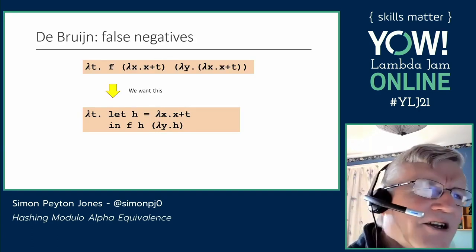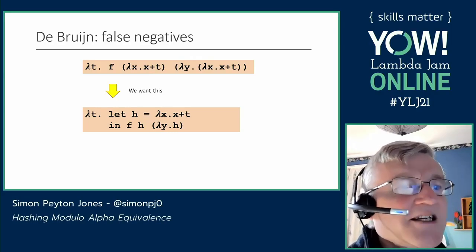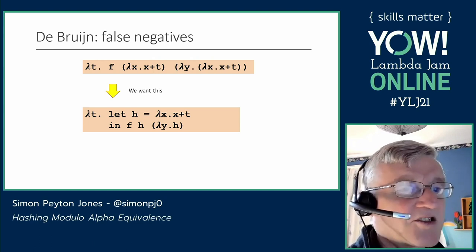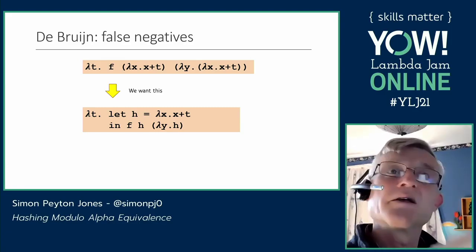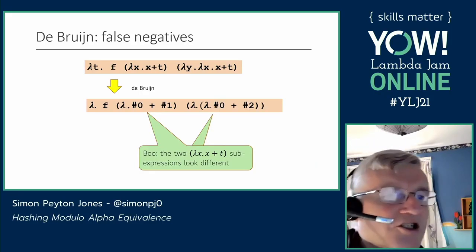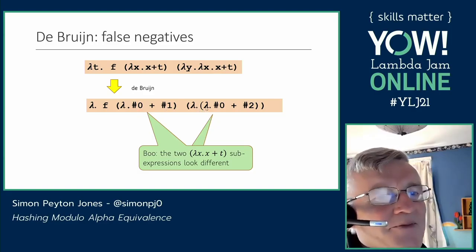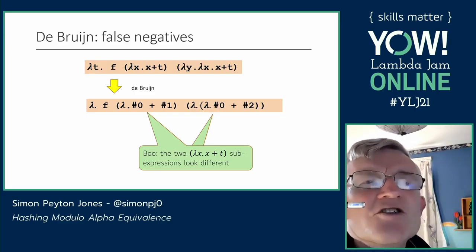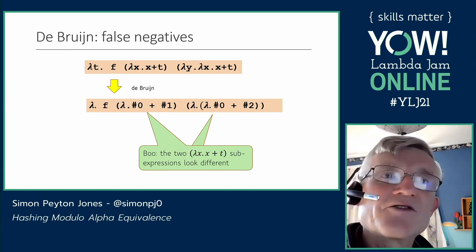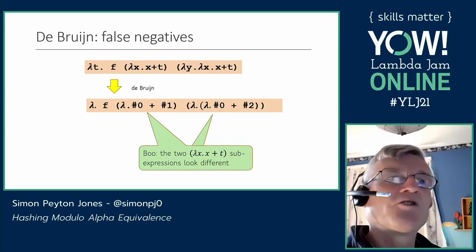Here's a false negative. I have an expression with lambda t on the outside and f applied to two lambdas. Inside the right-hand lambda is lambda x, x plus t, and the first argument is also lambda x, x plus t — we'd like to share those. But when we convert to De Bruijn notation, the first occurrence gives hash 0 for x and hash 1 for t, but in the second — which has two lambdas above it — t gets hash 2 because there are two lambdas intervening. So these two identical lambda terms are different in De Bruijn notation. Very sad.